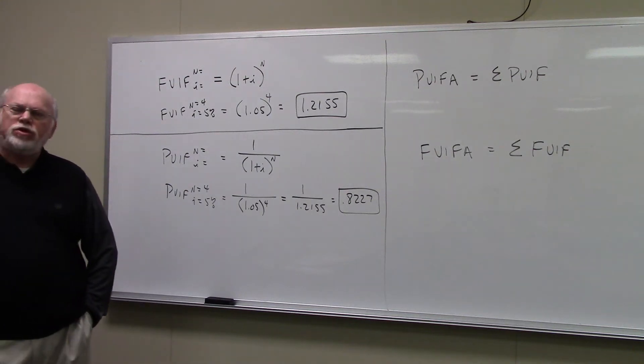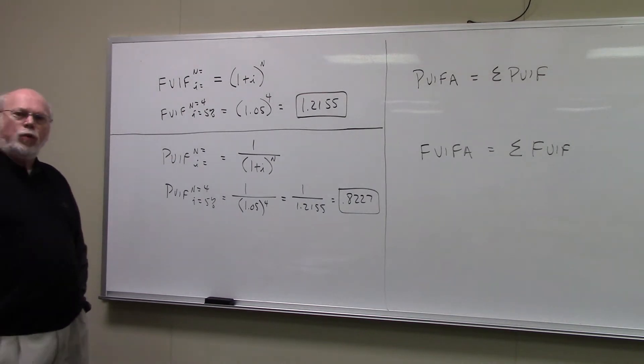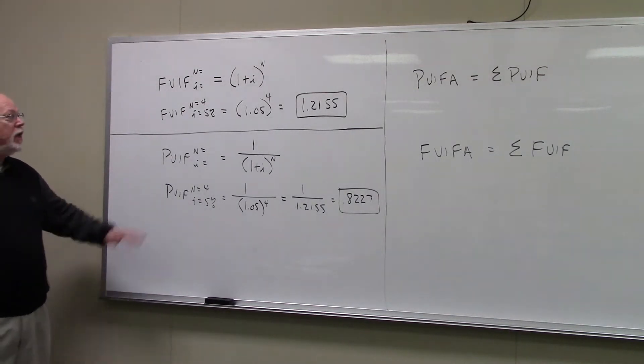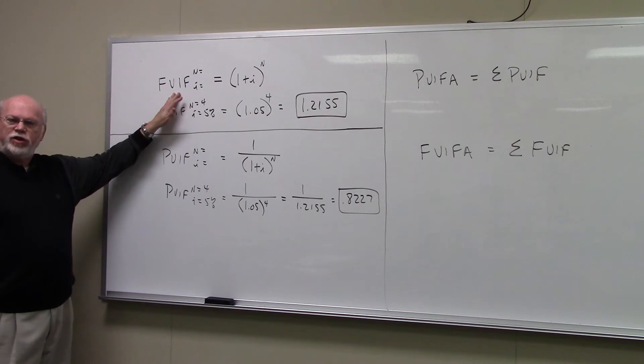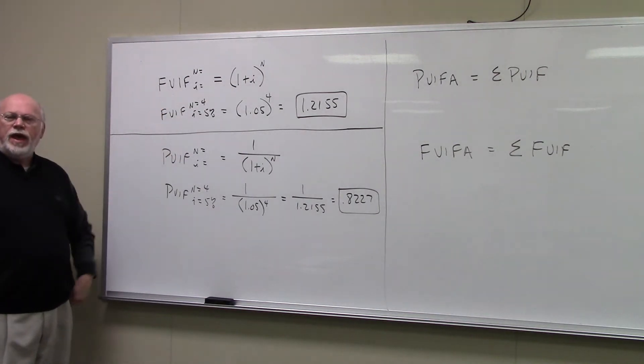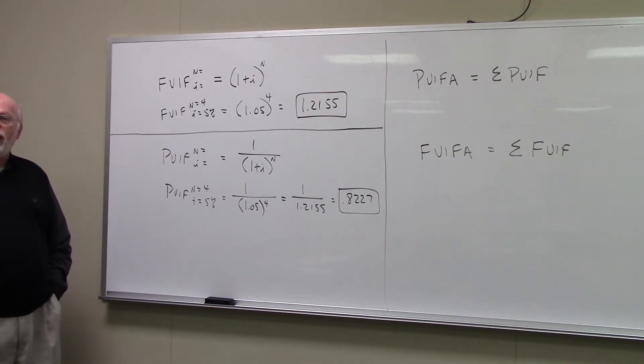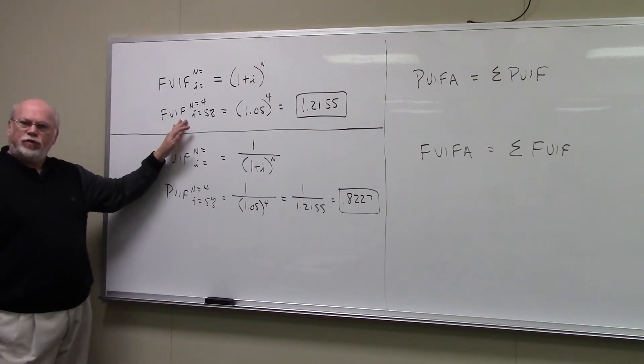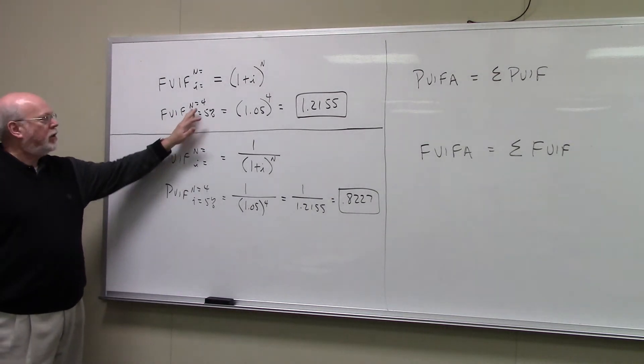We're talking about time value of money. I want you to understand the interest factor tables that we've been using. One of the interest factors that we use is the future value interest factor, your FVIF. The formula for calculating your FVIF, your future value interest factor, is 1 plus I raised to the N.